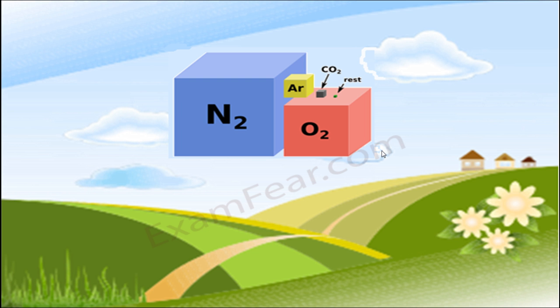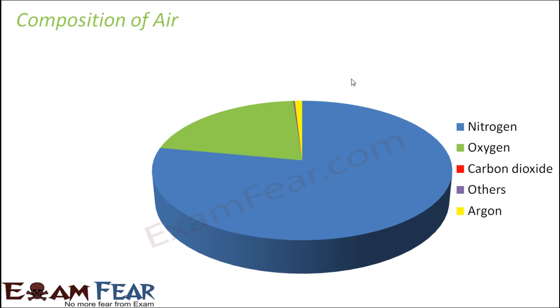Air is not a single gas; it is a mixture of various gases. The air around us, which seems like maybe just one gas, is actually many gases together. It contains nitrogen, oxygen, argon, carbon dioxide, and many other gases in very small amounts. In the diagram here, a bigger box represents nitrogen — showing it has the maximum proportion — a smaller box for oxygen, an even smaller box for argon, a very small box for carbon dioxide, and a tiny box for all other gases.